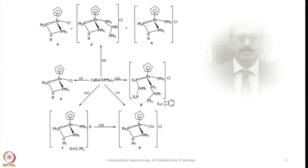Let us continue from where I had stopped. Let me take another interesting reaction here. In this reaction you can see I have used two entities: one is cyclopentadienyl bis(triphenylphosphine)chloro ruthenium(2+), and that is reacted with bis(diphenylphosphino)amine ligand.